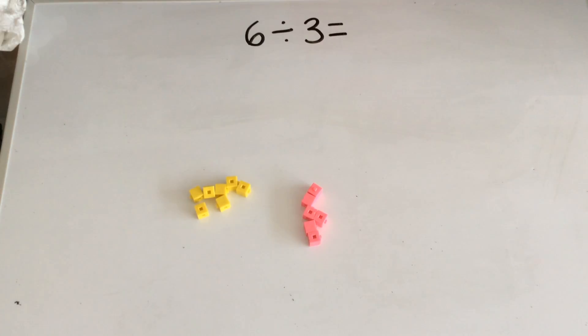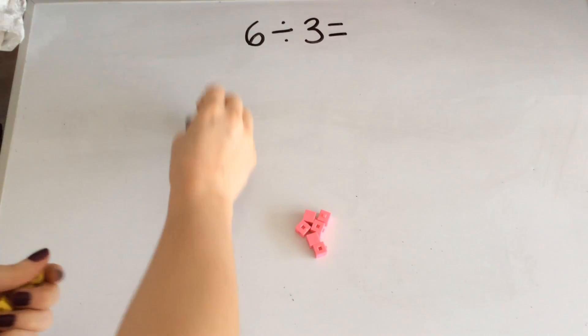The first way is by sharing out my 6. So if I've got 6 cubes, I could share them into 3 groups.